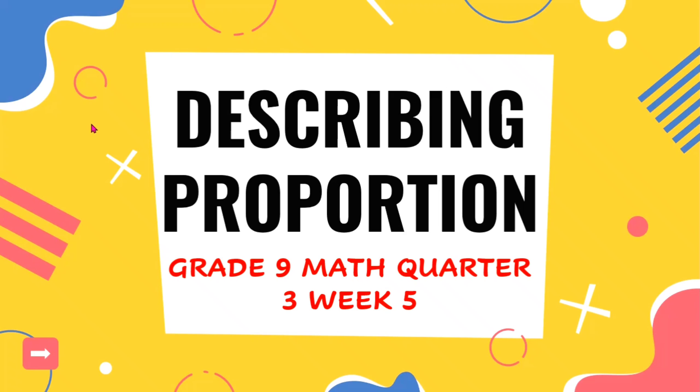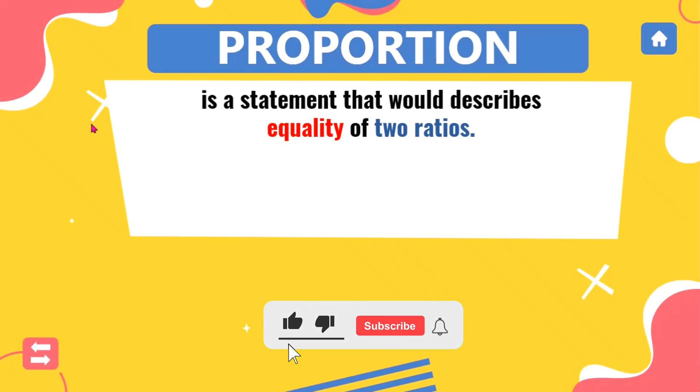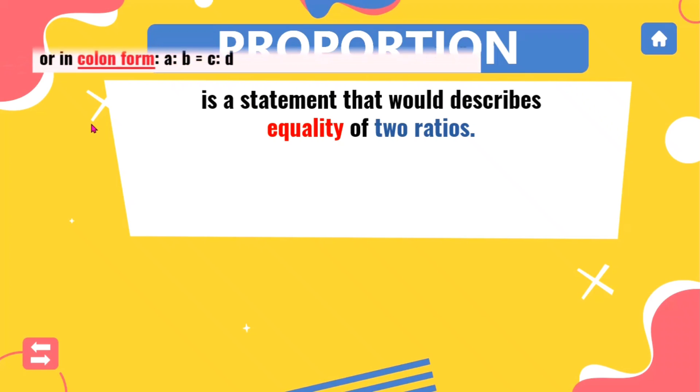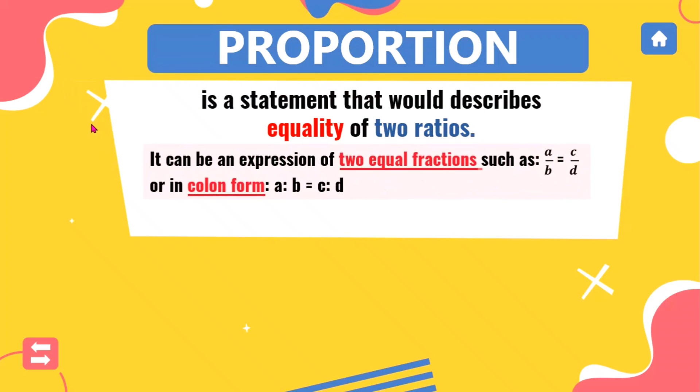So what is a proportion? Proportion means it is a statement that would describe equality of two ratios. Again, equality of two ratios. Dalawang ratio na equal. And it can be an expression of two equal fractions such as A over B is equal to C over D. Or in colon form, A is to B, C is to D.